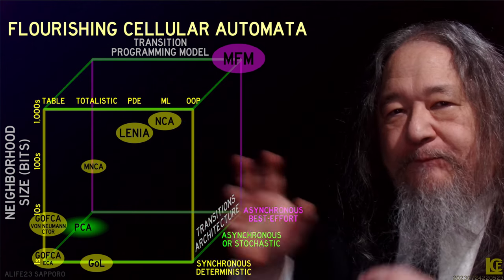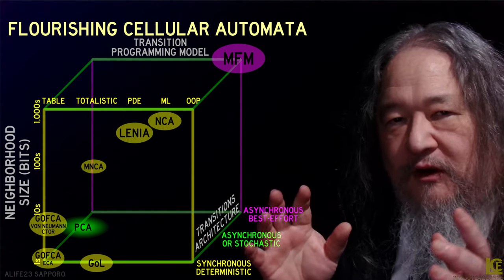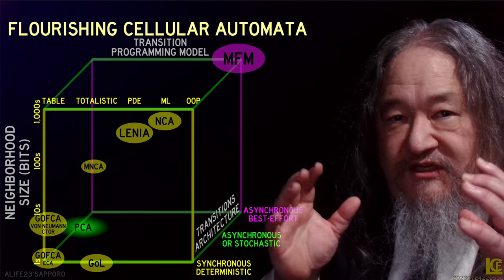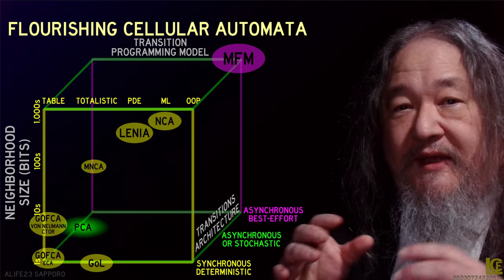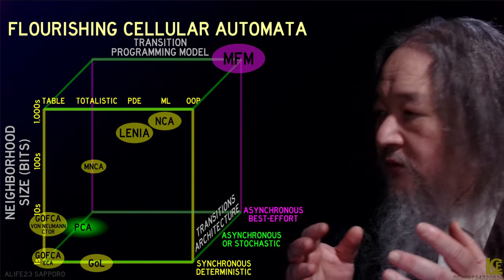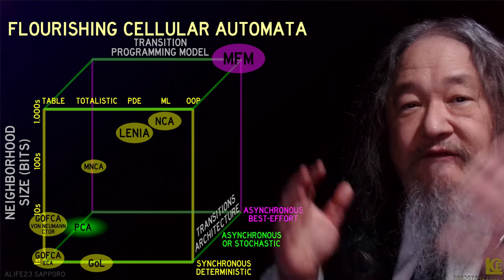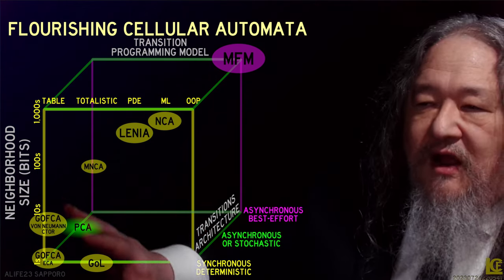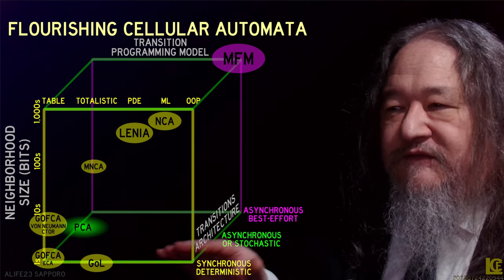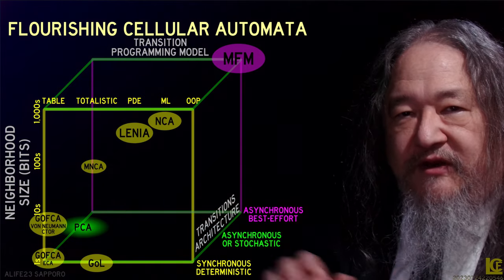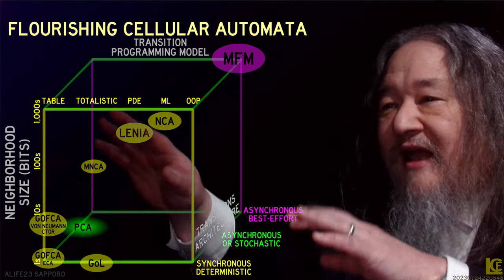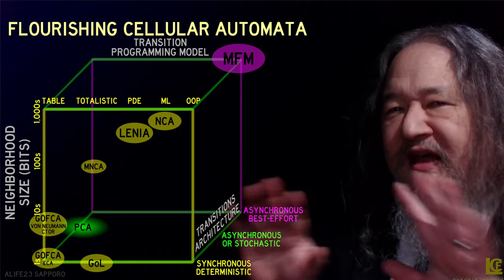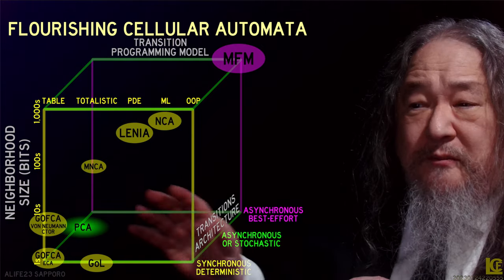If we interpret them in terms of floating point numbers, we get thousands of bits of state in the neighborhood, depending on how big the floats are. But the point is that all of this variety is on this front plane of synchronous deterministic delivery of events. There have been asynchronous attempts at Lenia and various things, but the vast majority of it is synchronous and deterministic.